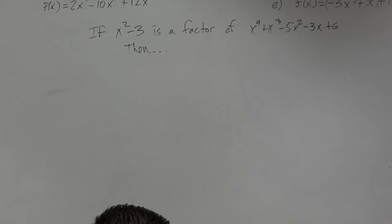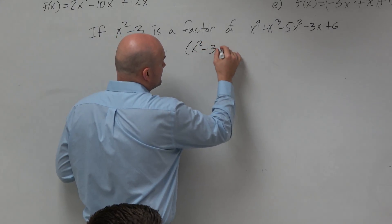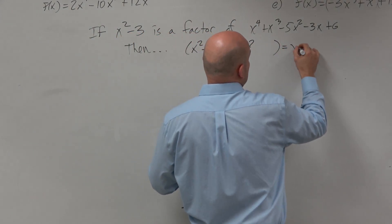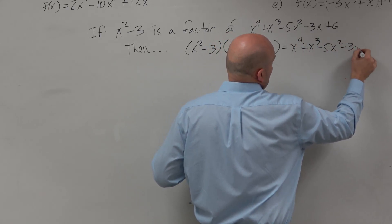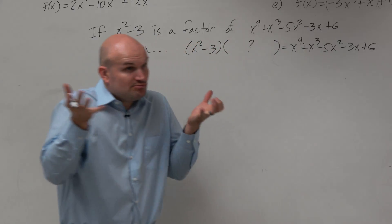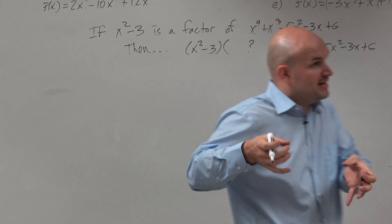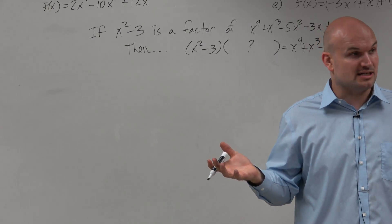What we have discussed is, when looking at this, if x squared minus 3x is a factor of x to the fourth plus x cubed minus 5x squared minus 3x plus 6, then we know that x squared minus 3x times something is equal to that. That is our general understanding of a factor. If something is a factor of something else, then we can multiply that factor times something else and we're going to get that expression.